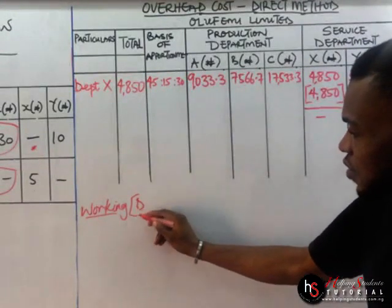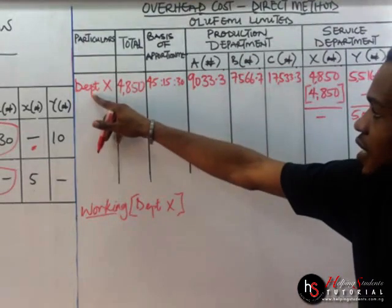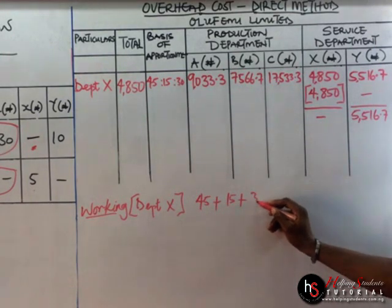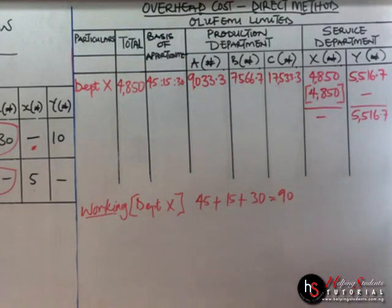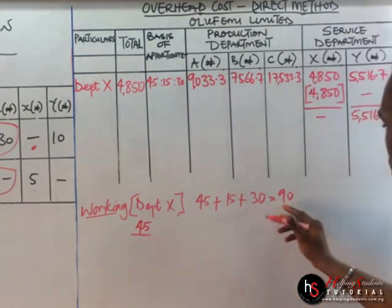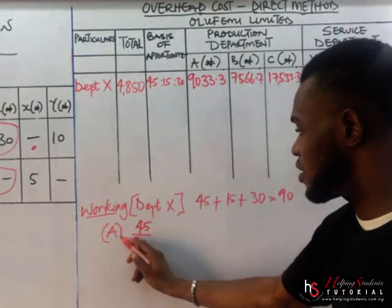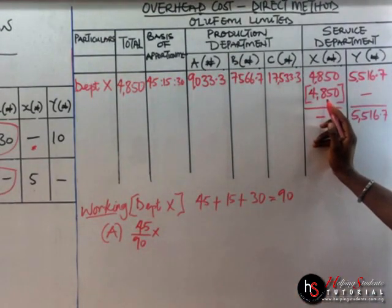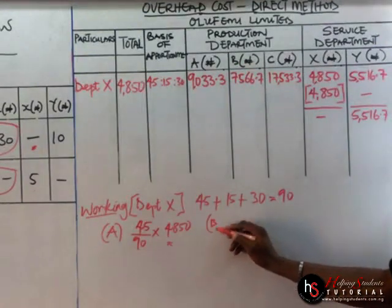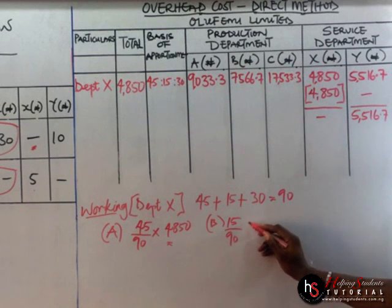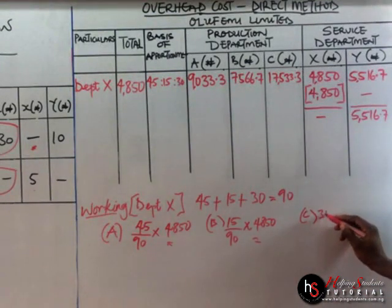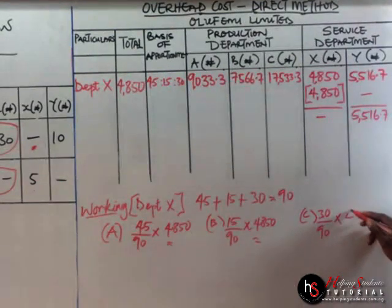For Department X, we have the ratio 45, 15, 30. So 45 plus 15 plus 30 gives us 90. We follow the same step: 45 divided by 90 times 4,850 — this is for department A. For department B, we have 15 divided by 90 times 4,850. We'll get the value. For department C, we have 30 divided by 90 times 4,850.